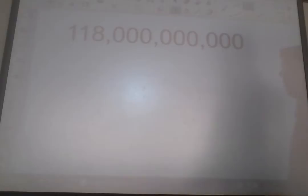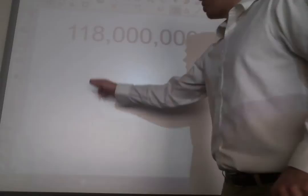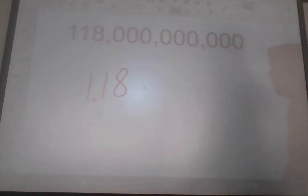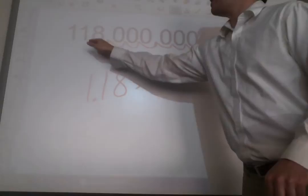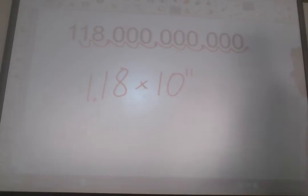One final example here. 118 billion. We're going to go ahead and put our 118 and the decimal right there. Times 10. Let's see how many times that decimal hopped. 1, 2, 3, 4, 5, 6, 7, 8, 9, 10, 11 times. So, 1.18 times 10 to the 11th power.